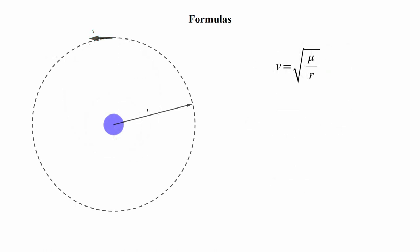Up next is another familiar formula. This calculates the orbital velocity of an object in a circular orbit of radius r. Again, μ is the standard gravitational constant of the parent body.